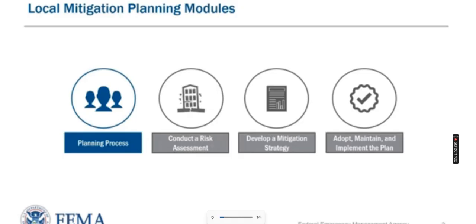The planning process is one of four key elements of developing a hazard mitigation plan. The other three elements are to conduct a risk assessment, develop a mitigation strategy, and adopt, maintain, and implement the plan.